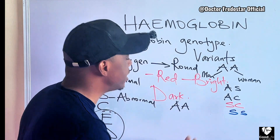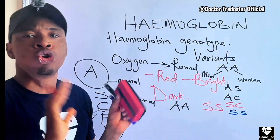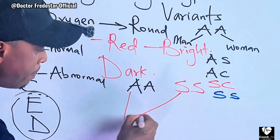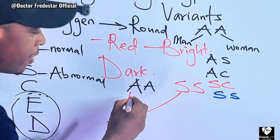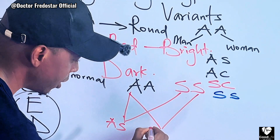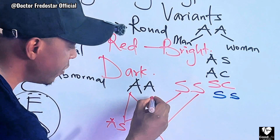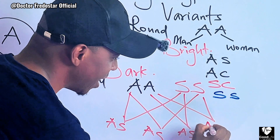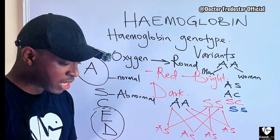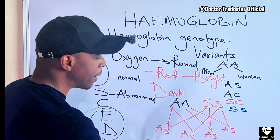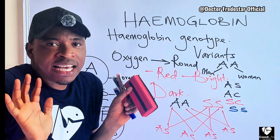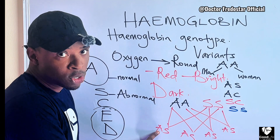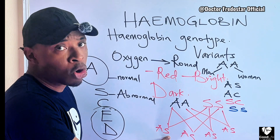What if the person you want to marry is SS? Is there any problem? No problem — you can marry. Let me show you: your A meets their S — the child will be AS. Your A meets their other S — the child will be AS. So all your children will be AS — one normal hemoglobin and one abnormal. No problem.